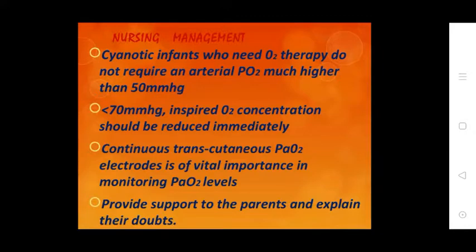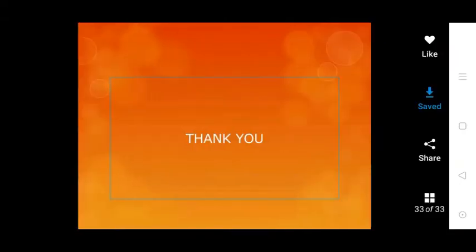Nursing management: neutral ICU combined with monitoring of systematic status, anti-sepsis, warm and dry environment, and feeding. Cyanotic infants need O2 therapy but arterial PO2 should not be much higher than 50 mmHg. Inspired O2 concentration should be reduced immediately. Continuous transcutaneous PO2, electrolytes monitoring, and vital signs are of great importance. Provide parent support and explain the condition. Topic complete.